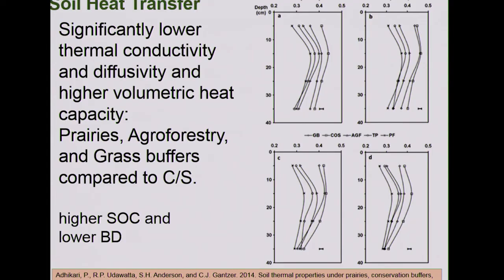Agroforestry buffer systems can also help buffer soils from extreme temperature conditions, which helps store soil carbon longer and supports different microbes. Agroforestry buffers and perennial prairies and grass buffers have very low thermal conductivity and diffusivity and higher volumetric heat capacity, providing more buffering capacity from extreme temperature conditions. These systems also have higher carbon and lower bulk density.